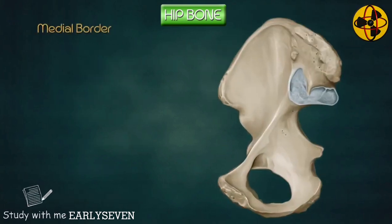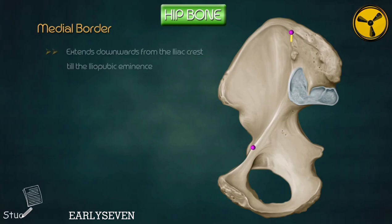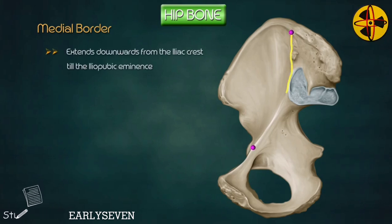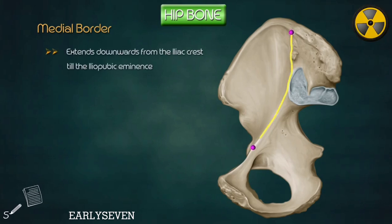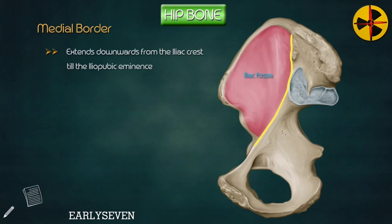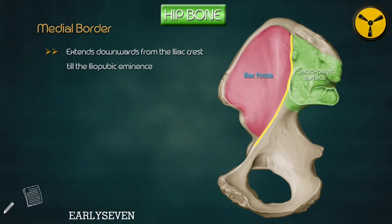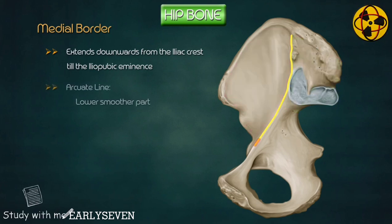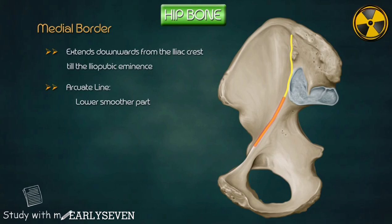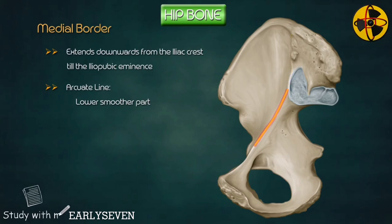Medial border. It extends downwards from the iliac crest till the iliopubic eminence, and separates the iliac fossa from the sacral pelvic surface. Its lower part is smooth, round, and is called the arcuate line.